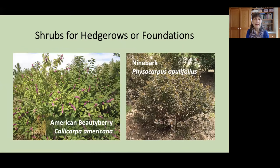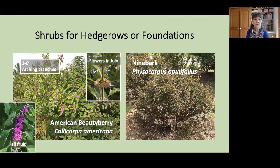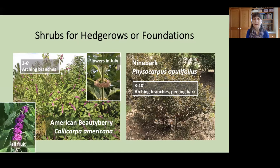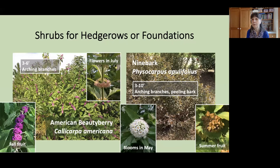Here are two plants with a habit somewhat like that of forsythia, with an arching or fountaining habit. American Beautyberry, Callicarpa americana, reaches about three to six feet. It has lavender flowers that completely surround the stem in July and this absolutely stunning fall fruit that is attractive to about 45 species of birds. Ninebark, Physocarpus opulifolius, also has that arching form. It's a little taller, reaching three to ten feet. Like the river birch mentioned earlier, this also has exfoliating bark. It has lovely rounded blooms in May and then forms very interesting summer fruit that will linger on, providing interest.